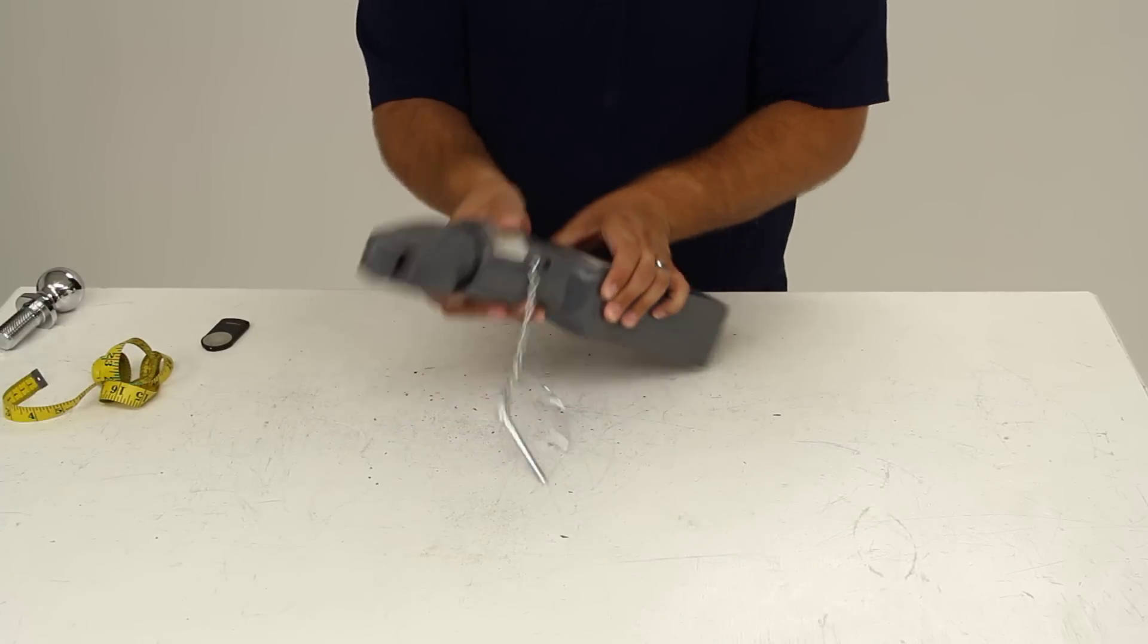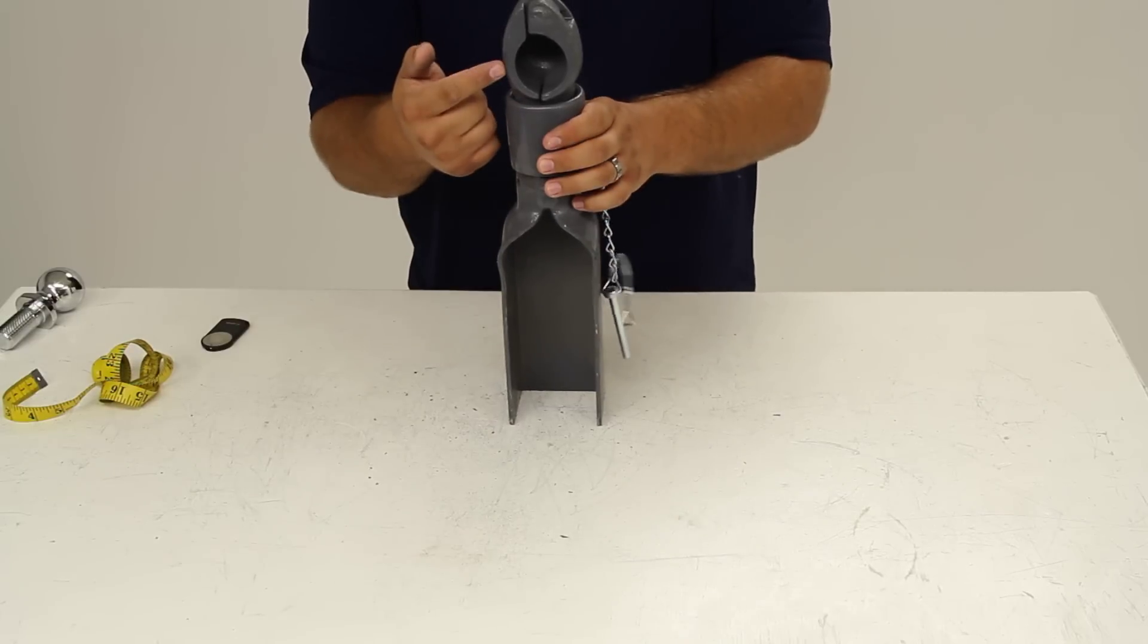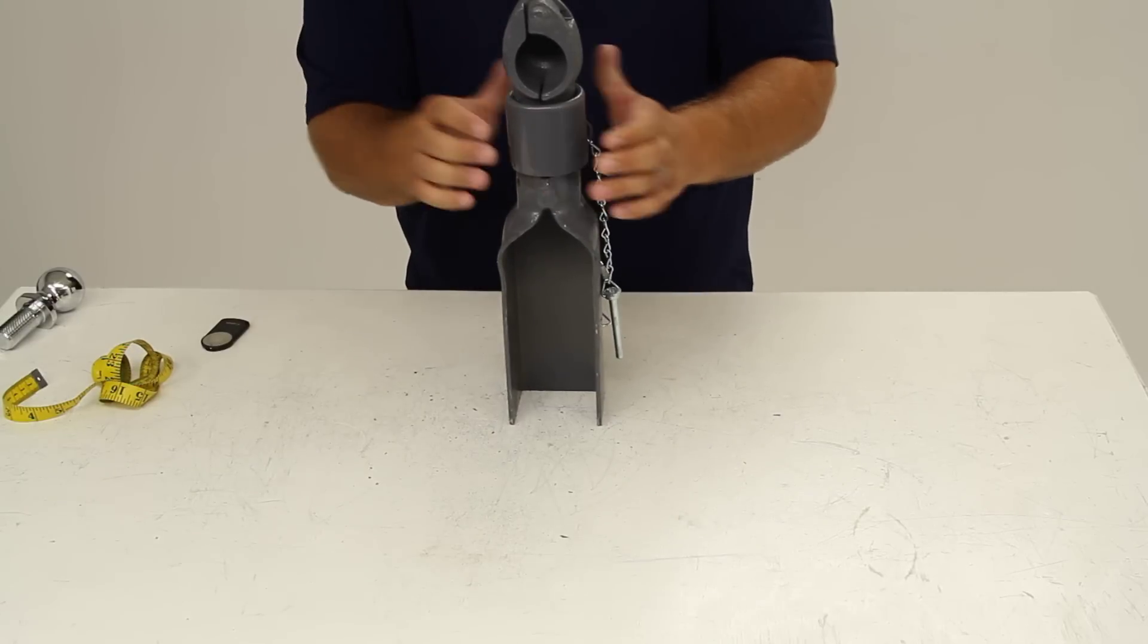With the pin out of the way, we can slide our coupler down, and this wedge here will release and swing open.